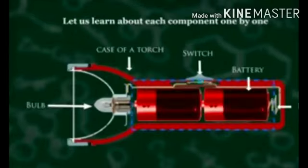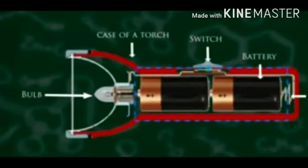Even in a torch, positive and negative terminals are marked. Before placing an electric cell in a torch, you must ensure that the positive terminal of a cell is placed along with the positive terminal of a torch. The torch gets the electric energy from these cells.